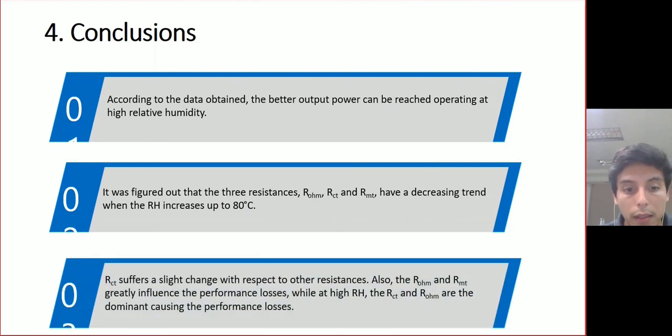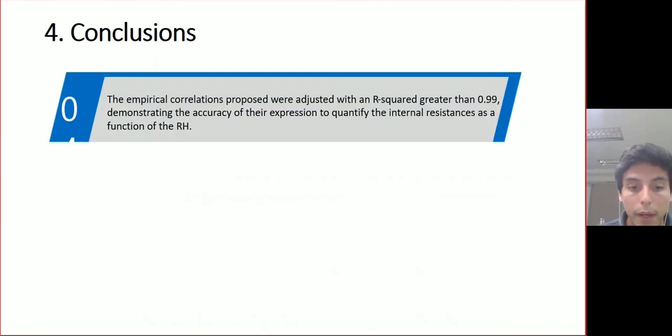The charge transfer resistance suffers a slight change with respect to other resistances. Also, the ohmic resistance and the mass transport resistance greatly influence the performance losses with high relative humidity. And finally, the empirical correlations proposed were adjusted with an R squared greater than 0.99, demonstrating the accuracy of their expression to quantify the internal resistances as a function of the relative humidity.